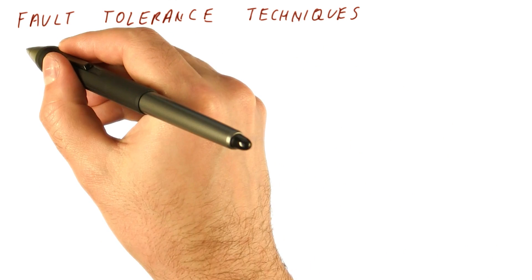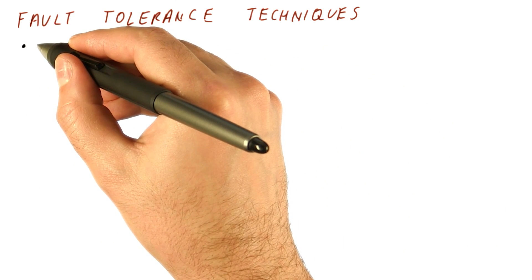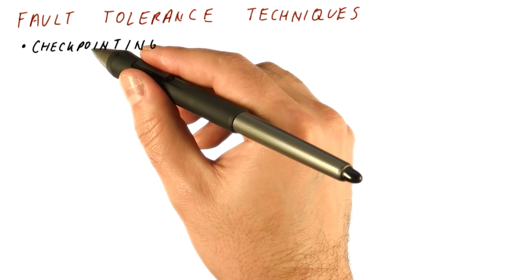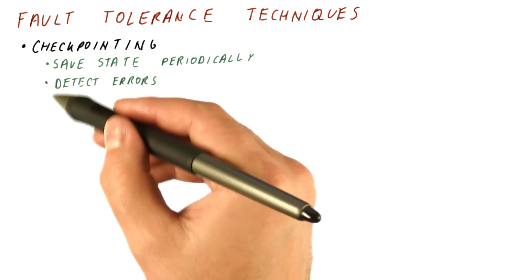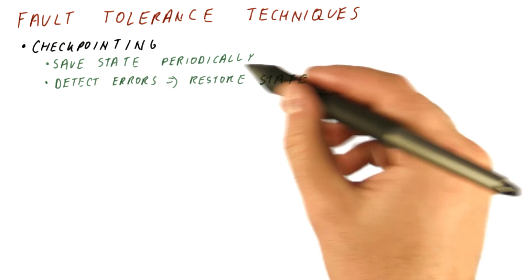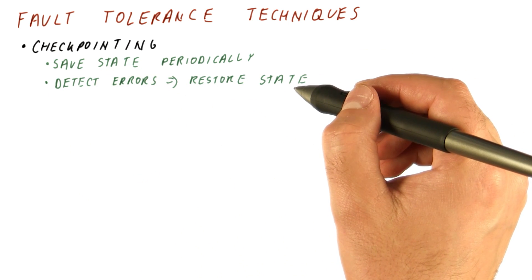The fault tolerance techniques that are used often are checkpointing, where we can save the state of the system periodically. Then we detect errors and restore the state of the system once we detect an error.